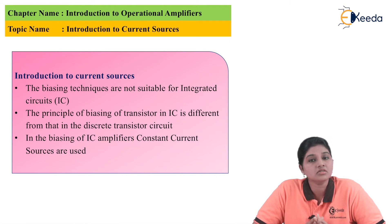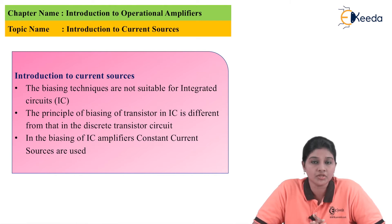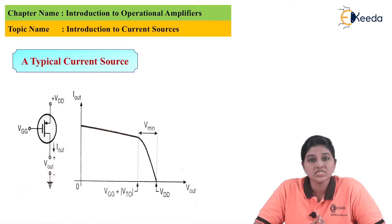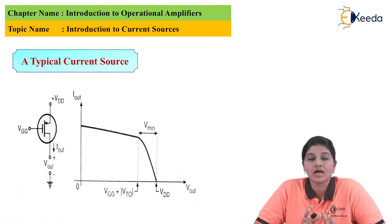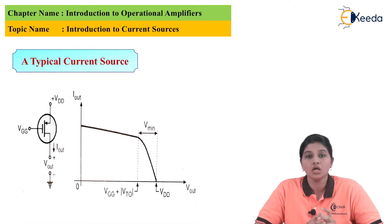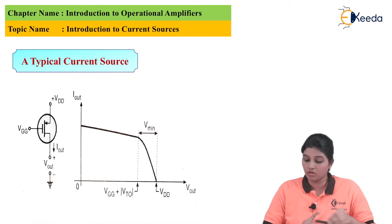The integrated circuit uses the constant current method for biasing of the circuit. Now let's have a look at a typical current source. Basically, the current source is considered as one of the components of the circuit and the current source consists of a positive node.